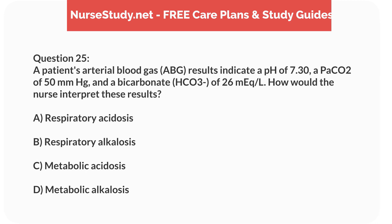Question 25. A patient's arterial blood gas (ABG) results indicate a pH of 7.30, a PaCO2 of 50 mmHg, and a bicarbonate (HCO3) of 26 mEq per litre. How would the nurse interpret these results? A. Respiratory acidosis. B. Respiratory alkalosis. C. Metabolic acidosis. D. Metabolic alkalosis.